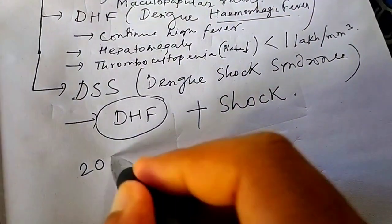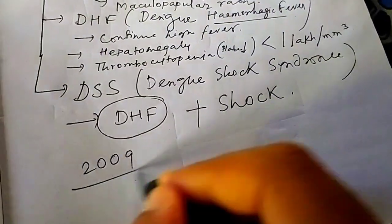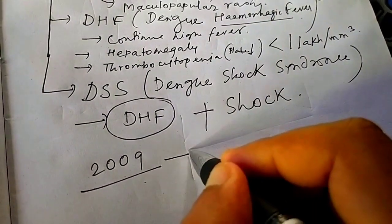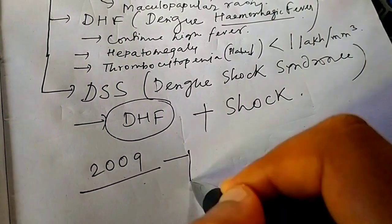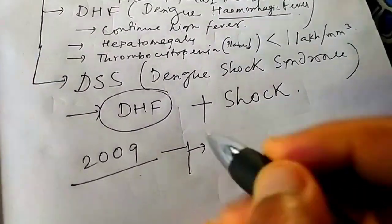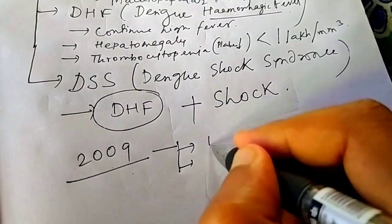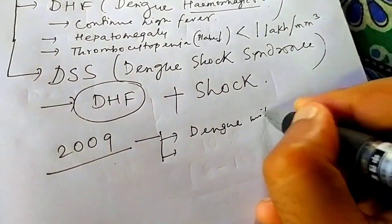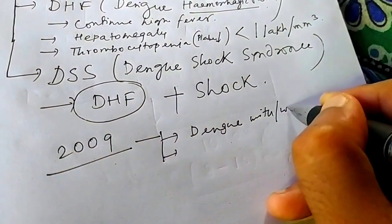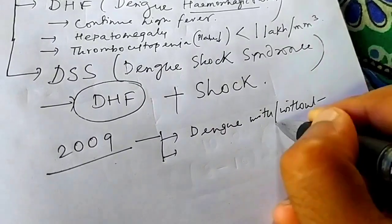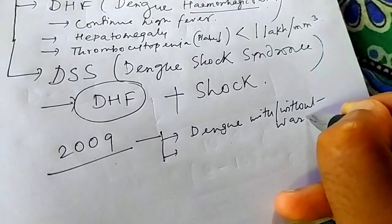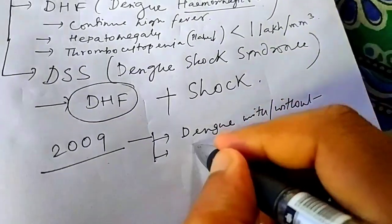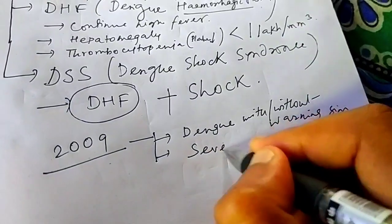In 2009, WHO classified dengue into two parts: one is dengue with or without warning sign, and the other is severe dengue.